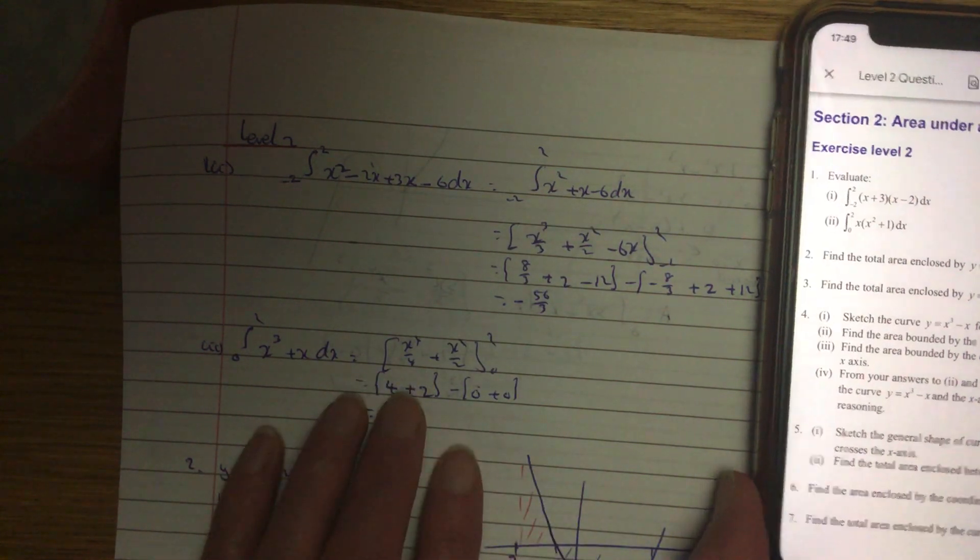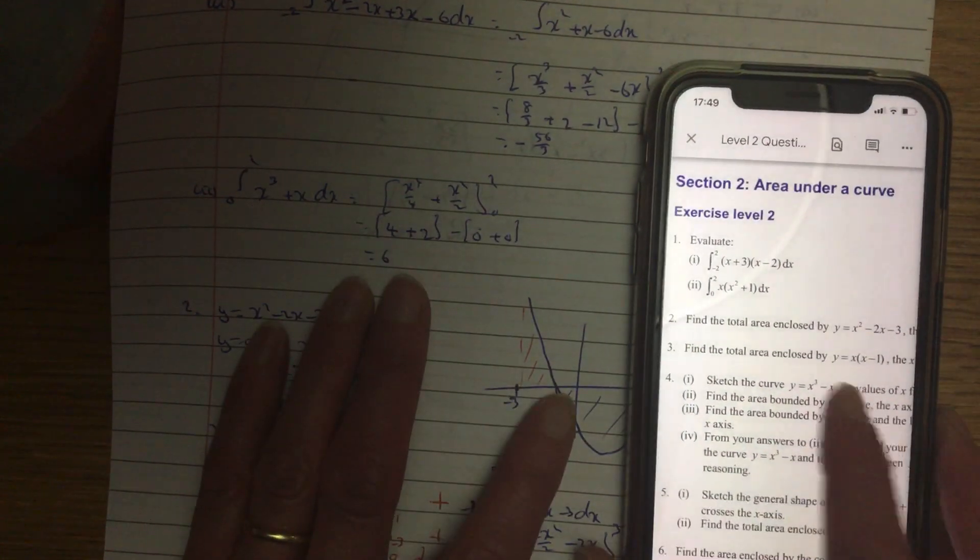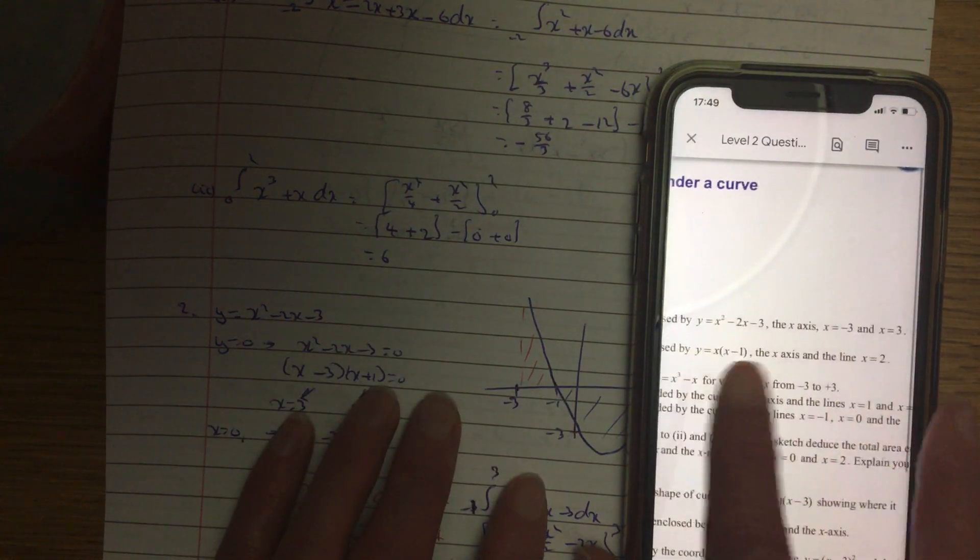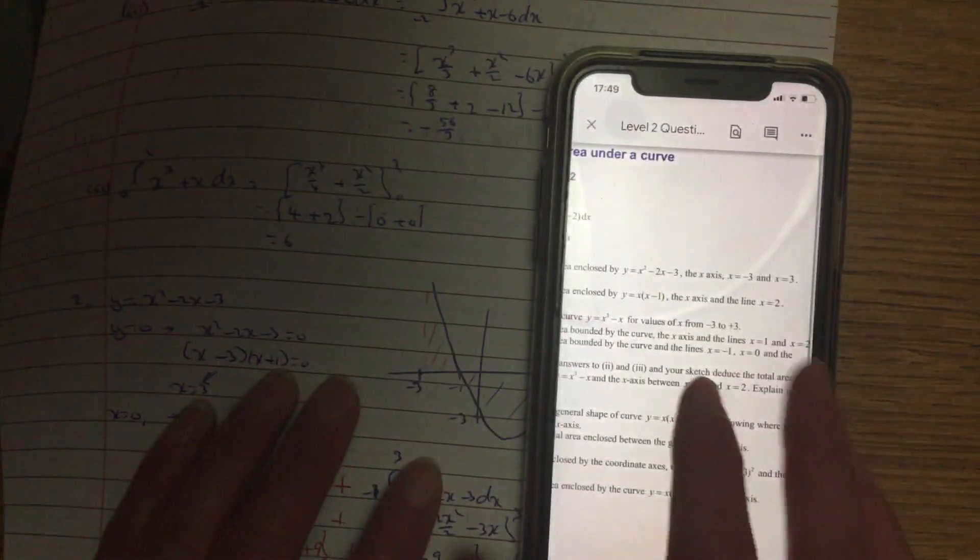Similarly, in number 2, multiply your brackets, integrate, sub your values in. Number 2, this one's a little bit different, so we'll take you to this one.